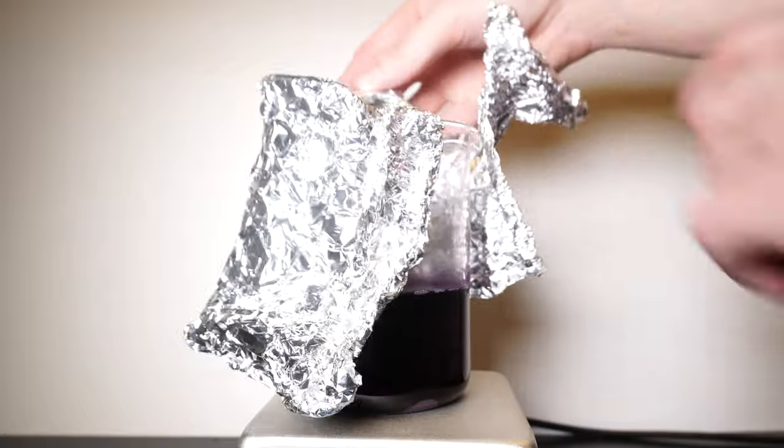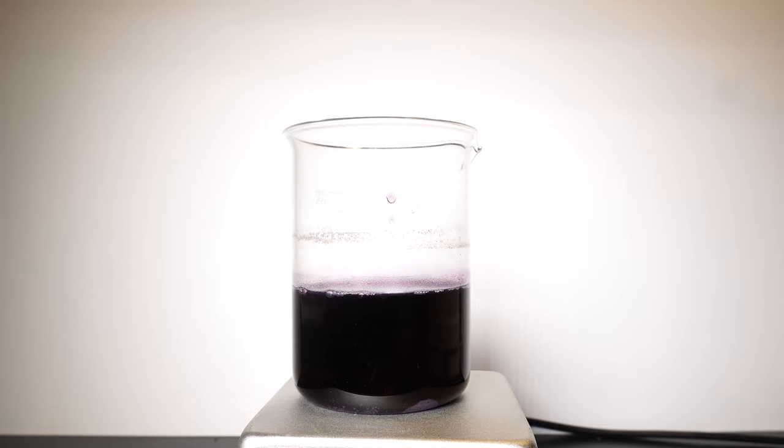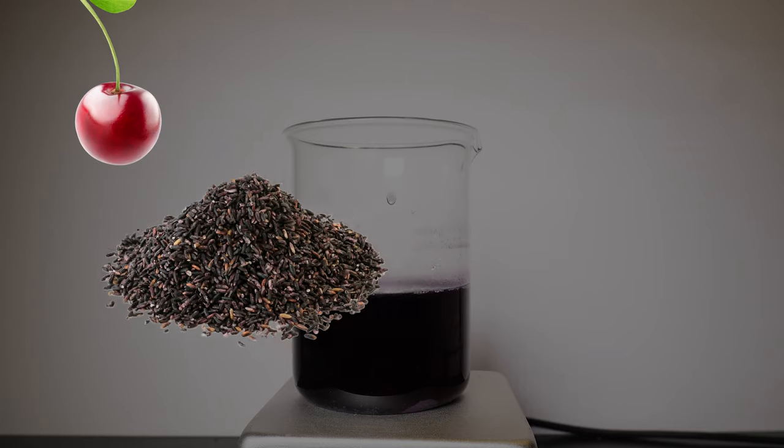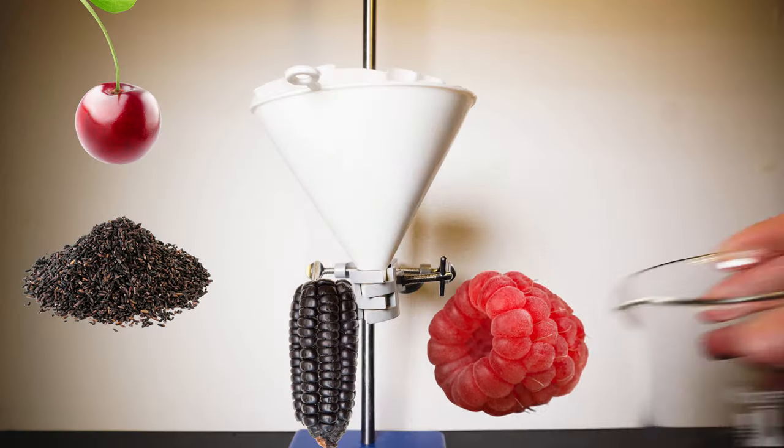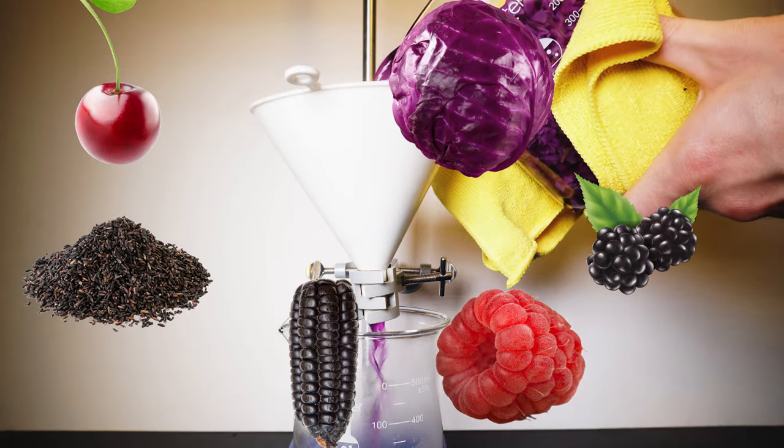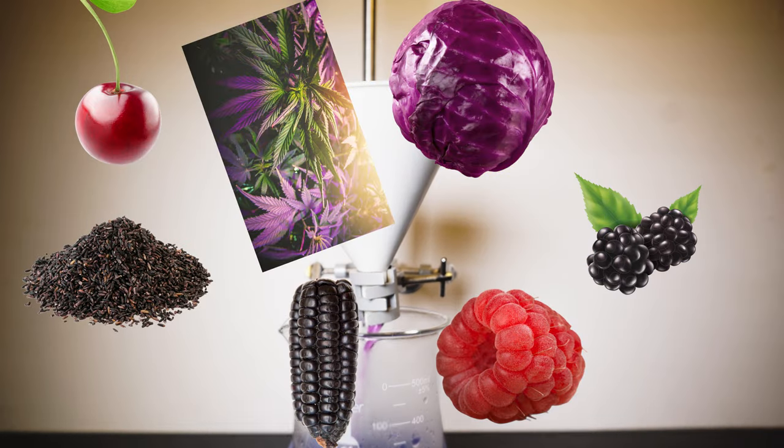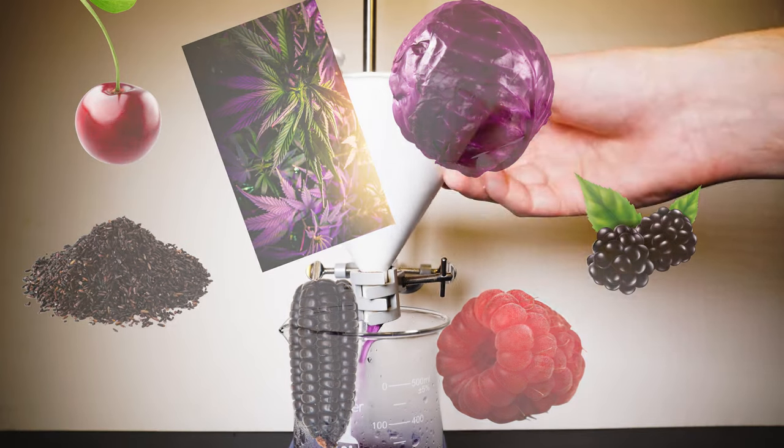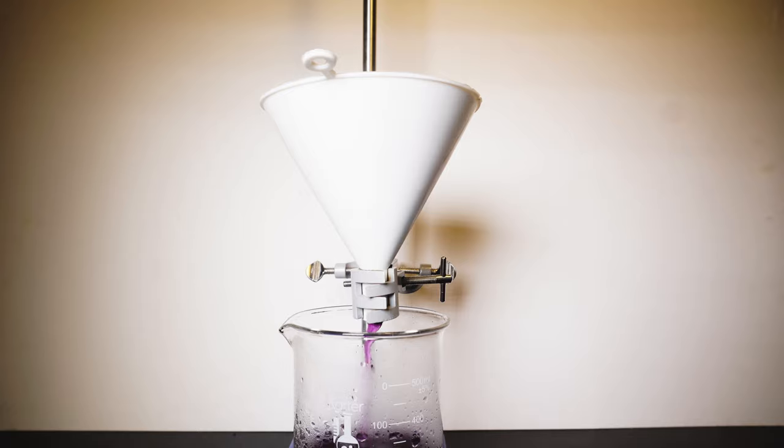Anthocyanins are produced in a bunch of different cultivars including cherries, black rice, purple corn, raspberries, blackberries and red cabbage. Though they are also found in things like cannabis which is responsible for the purple color it sometimes has. For now though let's get started.